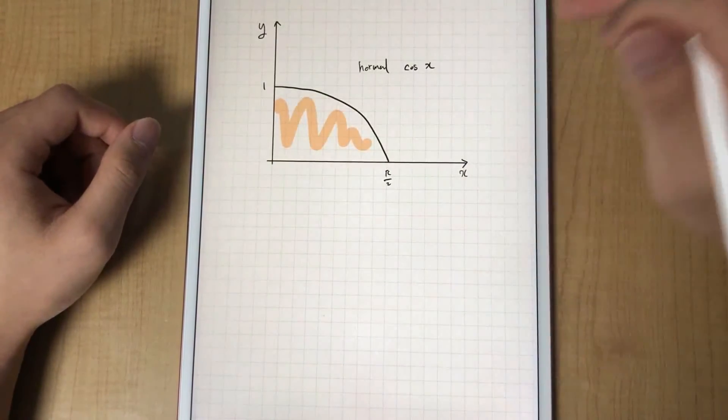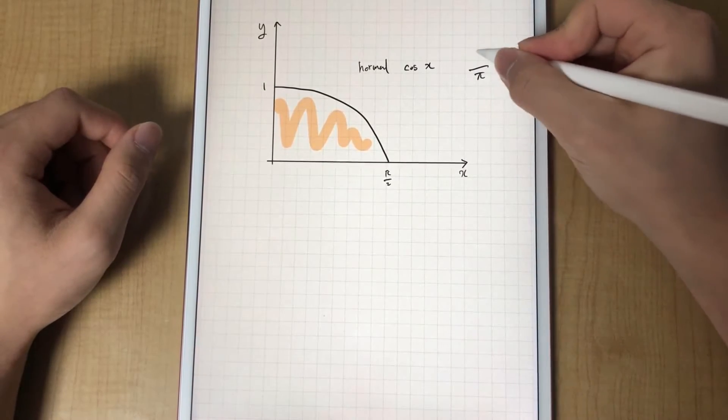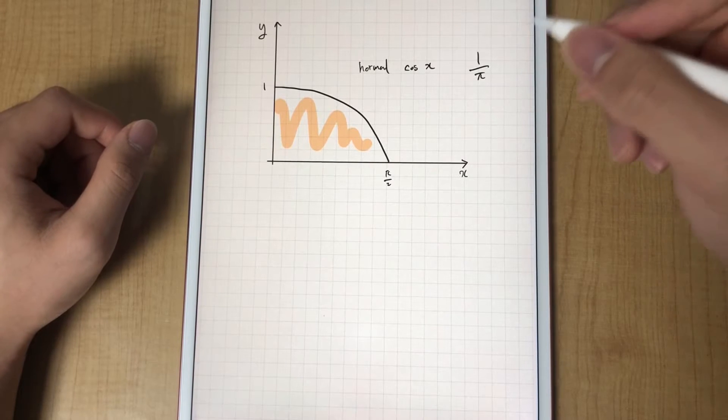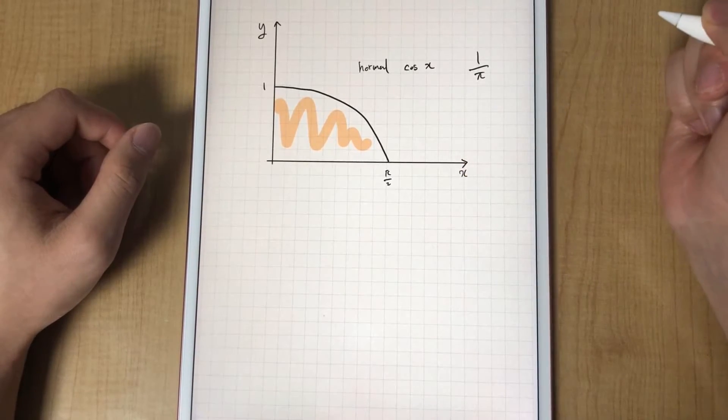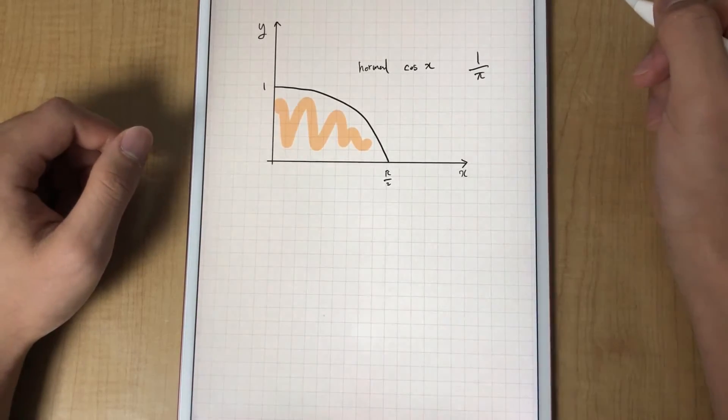If you examine the graph carefully, without the coefficient, this thing, it's the same graph as a normal cosine graph, just flipped by the y equals x axis. So the calculation can go like this.